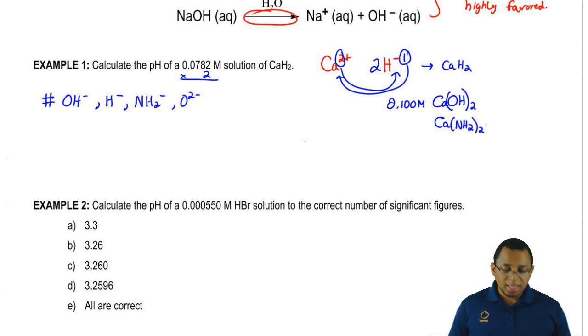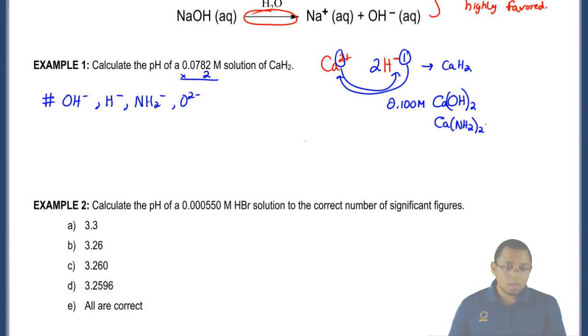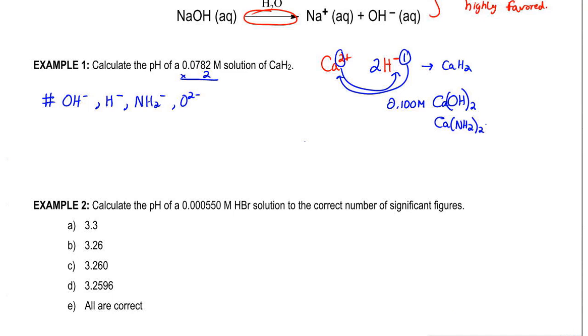We're going to multiply the initial concentration times two to get the real concentration. When we do that, we're going to get 0.1564 molar. That becomes our new concentration, so we're going to say POH equals negative log of OH-. It becomes negative log of 0.1564 molar.